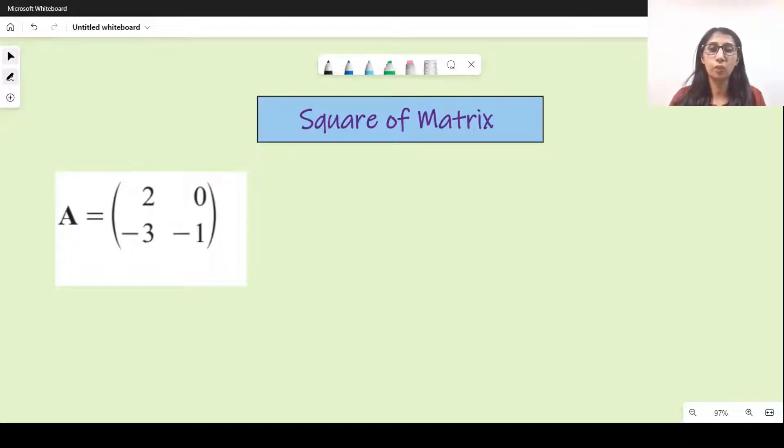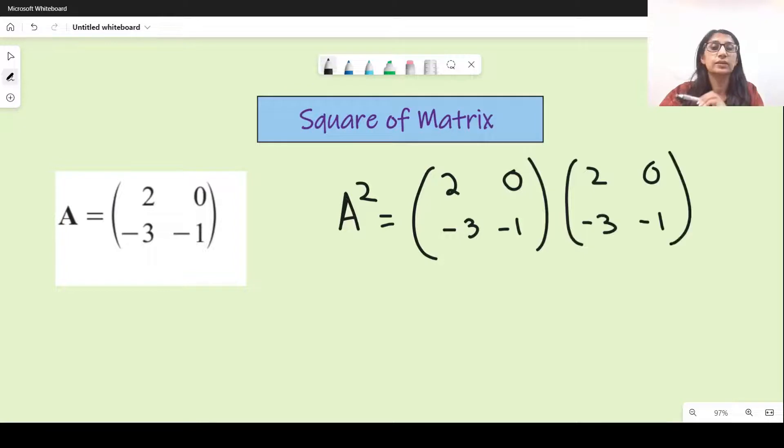All right, let's discuss what is square of a matrix. So if you're asked to find a square, that means that you multiply the matrix A with A itself. This does not mean that you square all these values. That's a very typical mistake that students make.